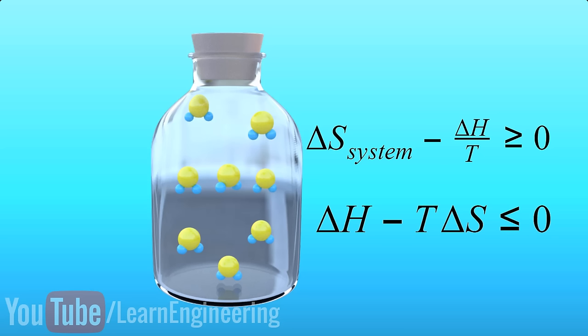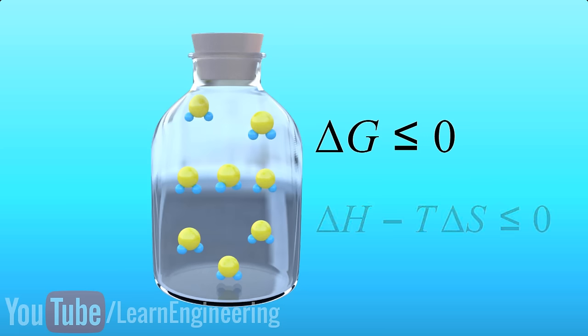When this term is less than or equal to zero, this process is possible. We call this new term Gibbs free energy, or in simple words, the change of Gibbs free energy of the system is less than or equal to zero, then that process is possible.